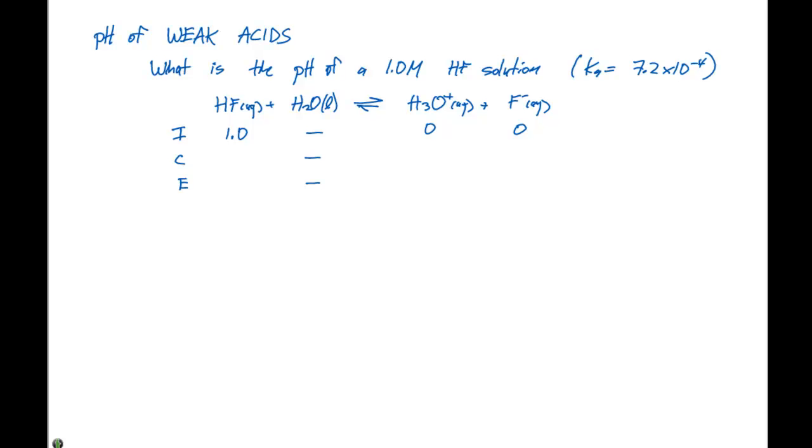As the equilibrium is established, the H3O plus concentration and the F minus concentration are going to be plus X and the HF will be minus X. So at equilibrium, we have 1.0 minus X, X, and X for all of our concentrations.